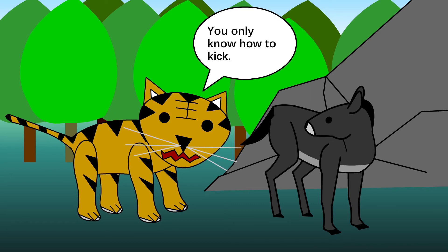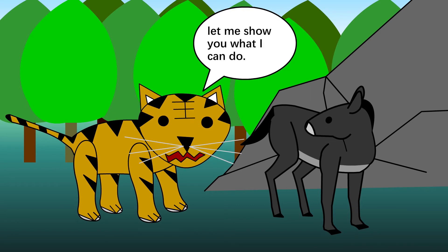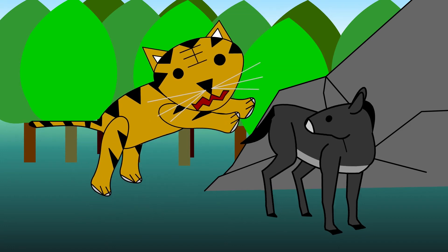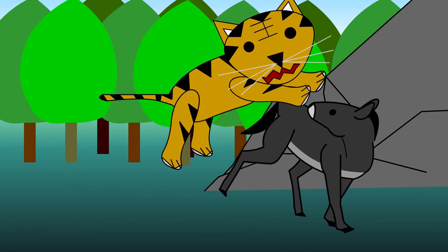The tiger said, all you know is how to kick, but I know how to hunt with my claws and teeth. After that, the tiger ate the donkey.